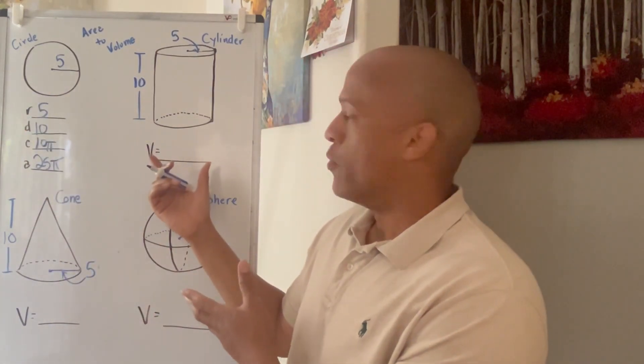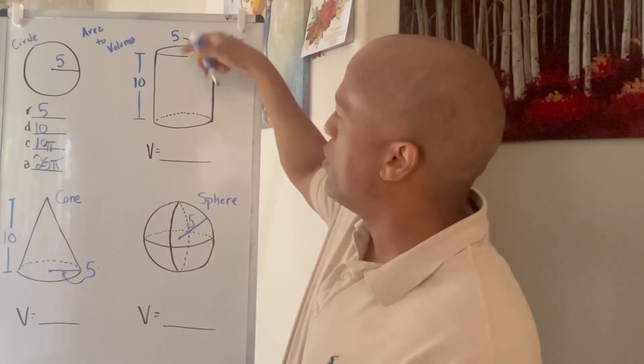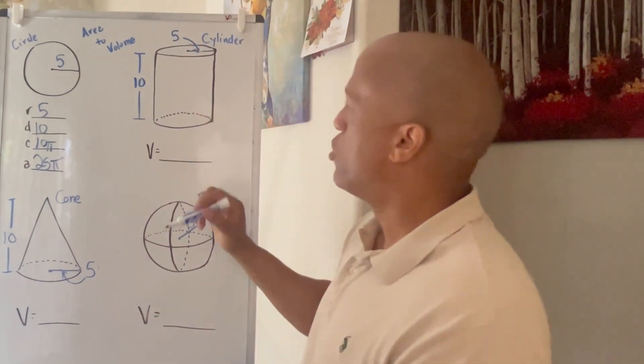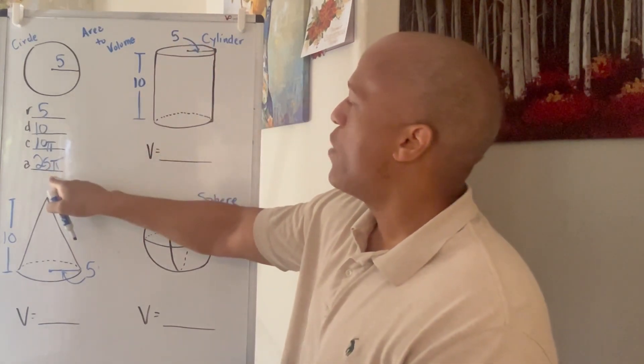Now cylinder, when we talk about volume, we're talking about filling this up with sand or water or how much I can fit inside this container. It's a three-dimensional figure. So now I'll have my base of the circle. I already found the area.